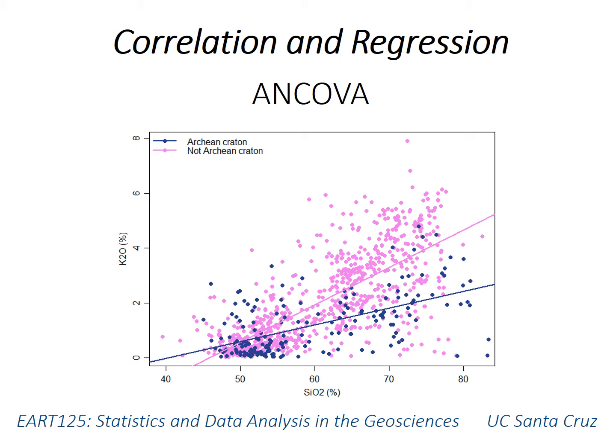This video covers ANCOVA, or analysis of covariance, which is a method for testing whether regression lines differ significantly, either in slope or in intercept, between different categories or between different levels of a factor.